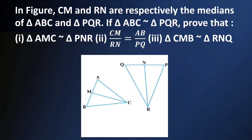In the figure, CM and RN are respectively the medians of triangle ABC and triangle PQR. If triangle ABC is similar to triangle PQR, prove three things: first, triangle AMC is similar to triangle PNR; second, CM by RN is equal to AB by PQ; third, triangle CMB is similar to triangle RNQ.